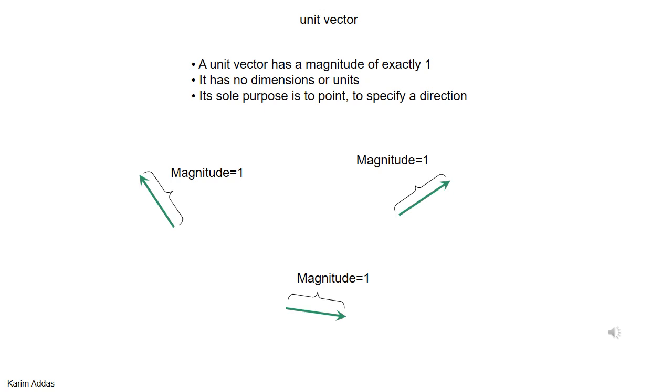A unit vector is a special kind of vector. It has a magnitude of exactly one. It has no dimensions or units. The only purpose it serves is to specify a particular direction in space.